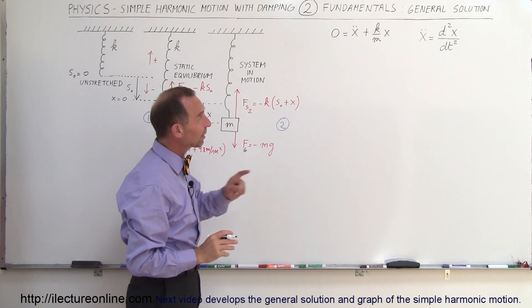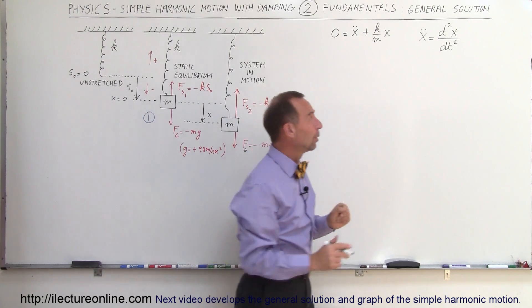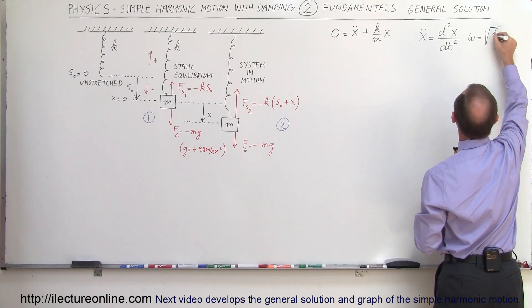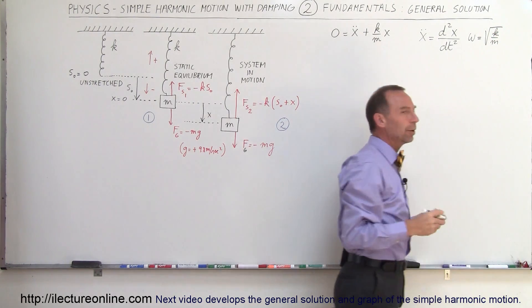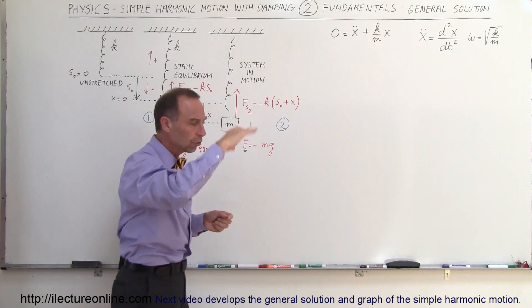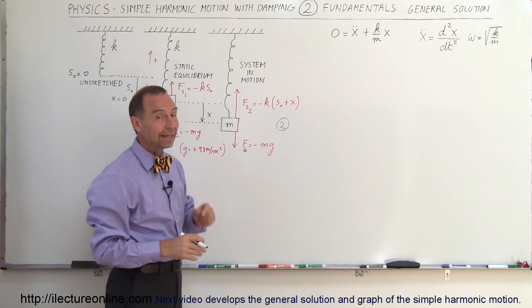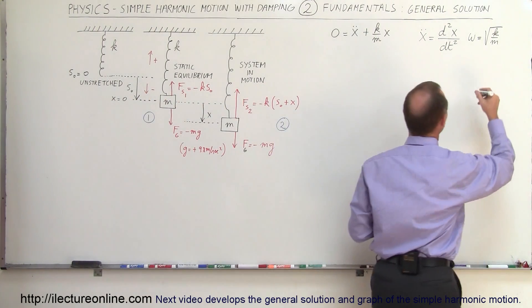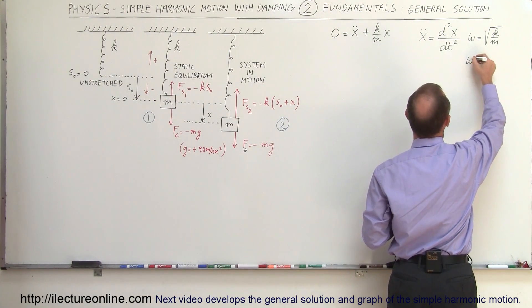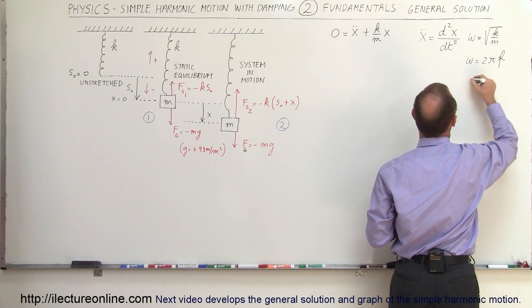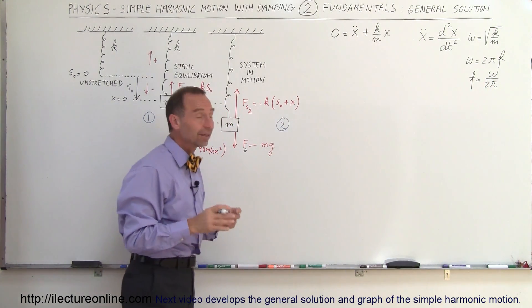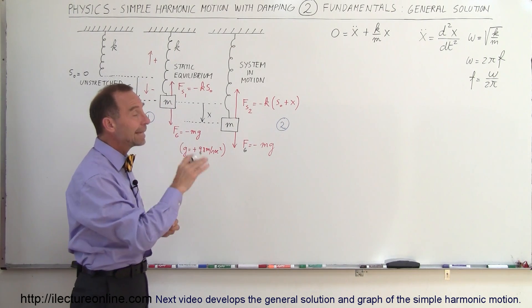We're going to make a substitution for the quantity k over m. We're going to call omega equal to the square root of k over m. Now what does omega stand for? This is simple harmonic motion — there's a certain frequency of oscillation. Omega is the angular frequency, that's the number of radians per second. The actual frequency f is equal to omega divided by 2 pi, so f is the oscillatory frequency in cycles per second. That's how omega is related to k and m.